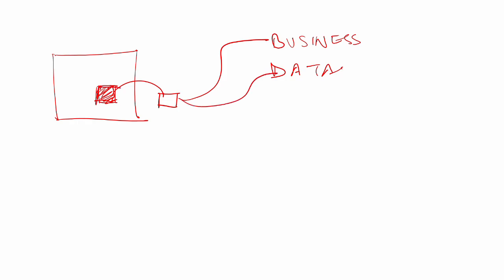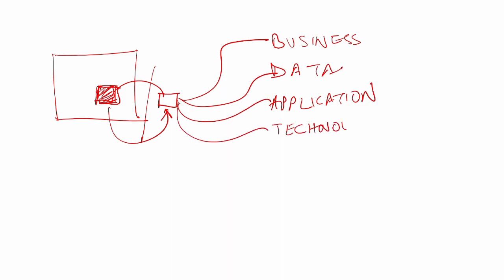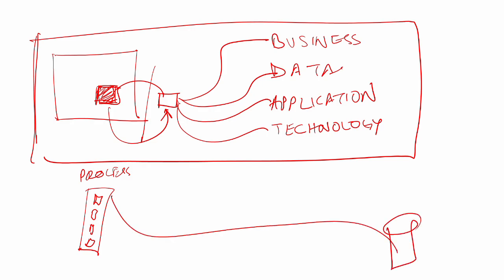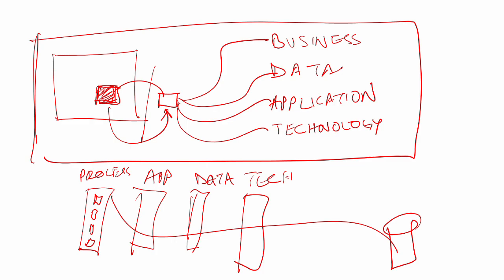There is also a data impact — some data they will take, some you'll keep, so you must segregate it. That data may be hosted in a larger application, which will also need to be segregated or have a new instance created. There is a technology impact too — how do you segregate the infrastructure hosting all these applications and data. When doing enterprise architecture on the project, you collect and document all this — processes, business functions, organizational structure, applications, data — into the architecture repository with all their interconnections.